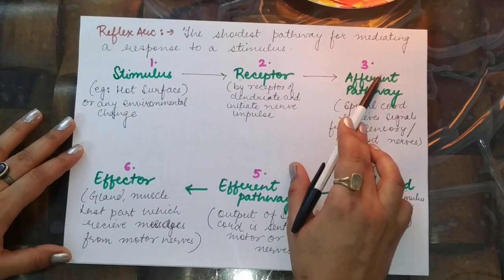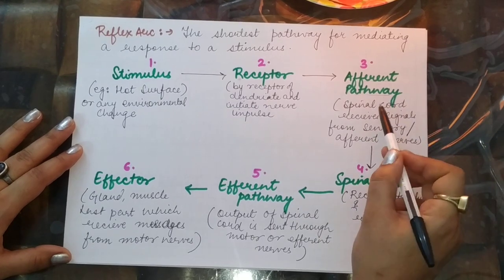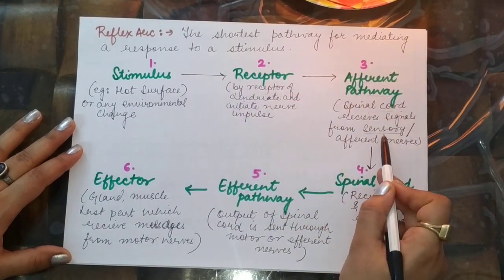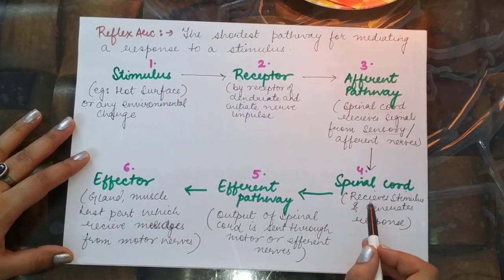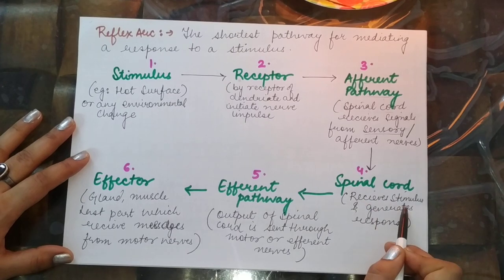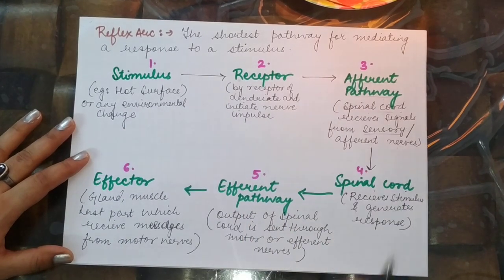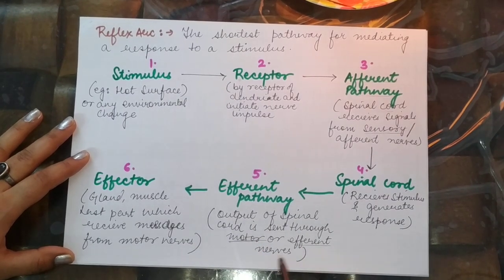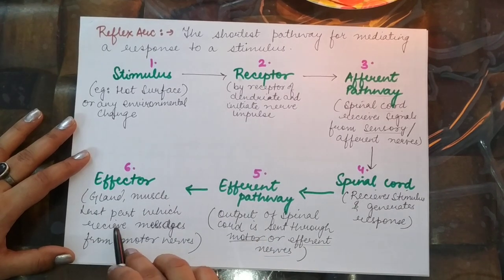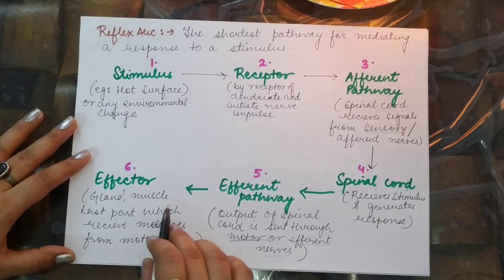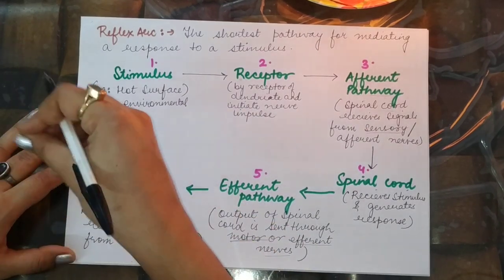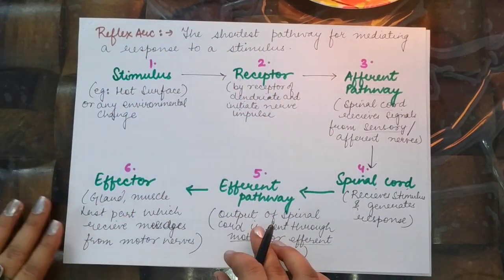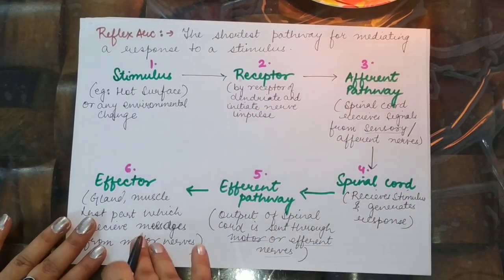The stimulus is then carried by sensory (afferent) nerves to the spinal cord. The spinal cord receives the stimulus and determines the response — for example, to take the hand back. The response is then carried by motor (efferent) nerves back to the effector, such as a muscle or gland. In this case, the muscles of the hand contract and pull the hand back. This is a common example of a reflex arc: the shortest pathway from stimulus to response.